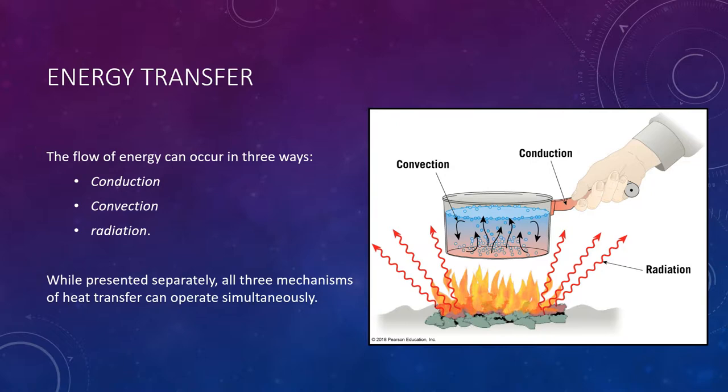The flow of energy can occur in three ways: conduction, convection, and radiation. Although they are all presented separately, all three mechanisms of heat transfer can operate simultaneously.